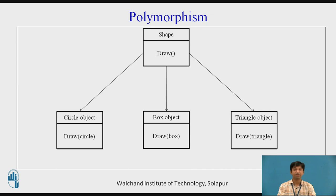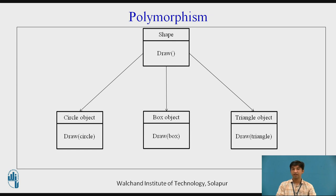Polymorphism plays an important role in allowing objects having different internal structures to share the same external interface, meaning a general class of operations may be accessed in the same manner even though specific actions may differ. Polymorphism is extensively used in implementing inheritance. For example, a function named 'draw' can draw a circle (accepting radius), a box (accepting length and breadth), or a triangle (accepting breadth and height) — the same function name performing different tasks.